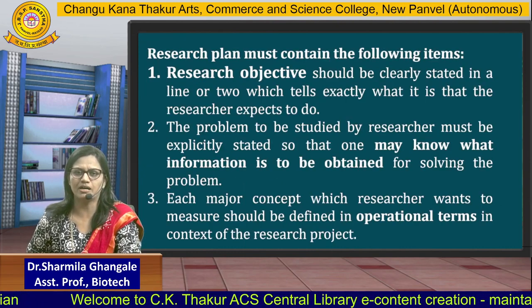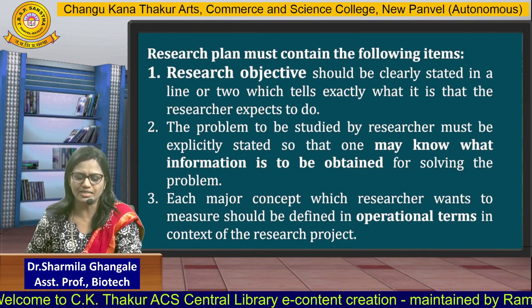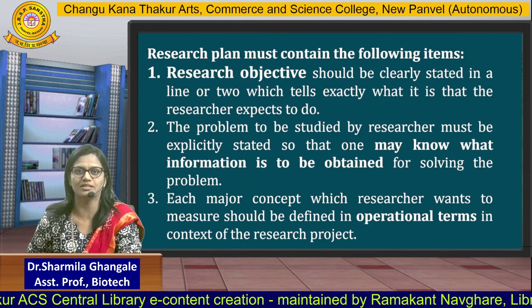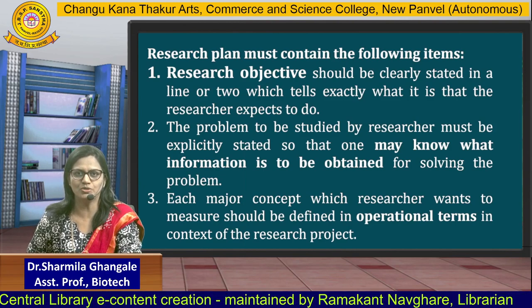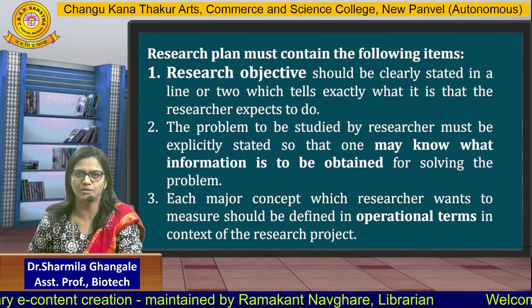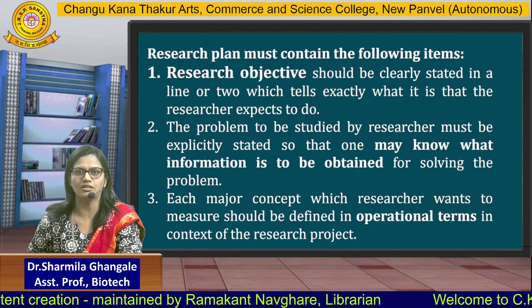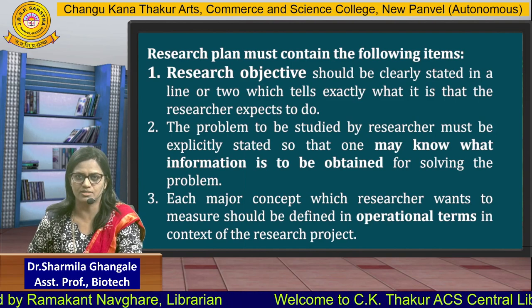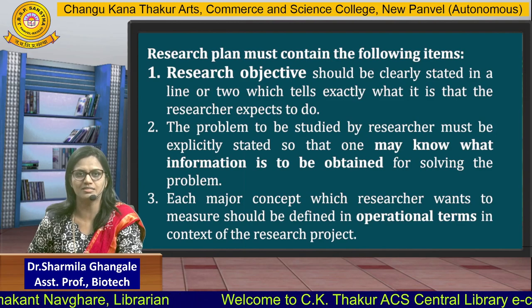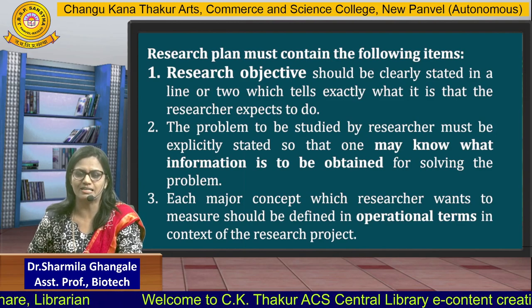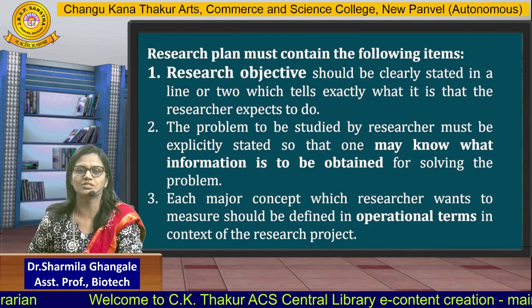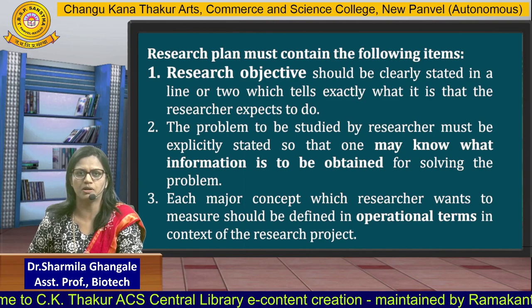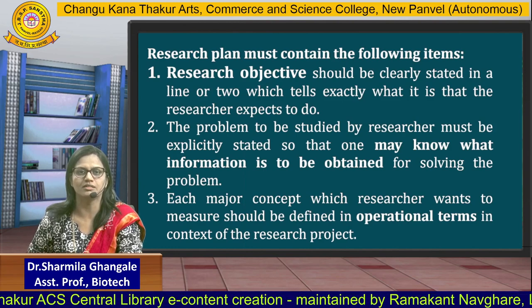Research plan must contain the following items. The first and foremost item of the research plan should include the research objective. What do we mean by objective? Objectives are the things which you are going to do for your research work. Research objectives are goals and should be clearly stated in a line or two, which tells exactly what the researcher is expected to do. That is why they are called research objectives — the research plan firstly explains or contains the research objectives.